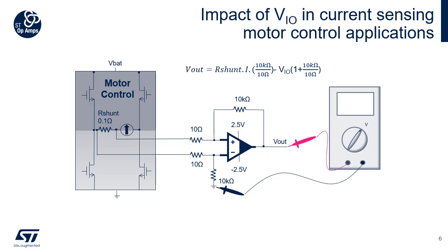Thanks to the H-bridge, the motor can be driven in both directions. The current measurement helps to determine the motor speed and its rotation direction. In such applications, it is desirable to use a shunt with a very low resistance to minimize the series voltage drop, which wastes less power and allows the measurement of high currents without a significant voltage drop. A typical shunt might be 0.1 Ω. At high current, the VIO of the OpAmp has little impact.